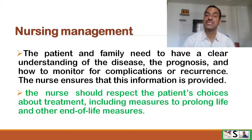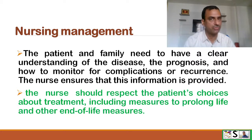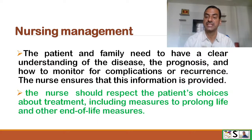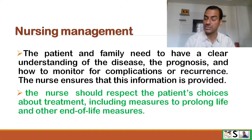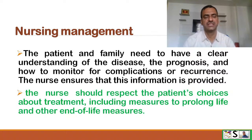The patient and family need a clear understanding of the disease, the prognosis, and how to monitor for complications and recurrence. The nurse ensures this information is provided. The nurse should respect the patient's choices about treatment, including measures to prolong life and end-of-life measures.